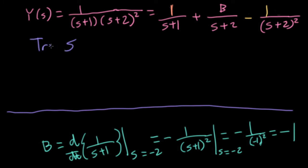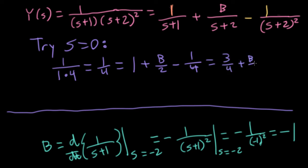How about let's try s equals zero. Well, on the left here I would have one over one times two squared, which is four. So I've got one fourth. And then on the right here I would have one plus B divided by two minus one over four. So on the right I would have three fourths plus B over two. I could multiply both sides of the expression by four, which gives me one is equal to three plus two B. That would give me minus two is equal to two B. And that gives me B equals minus one, which matches what I got with the derivative trick. So sometimes you might want to approach it something like that.